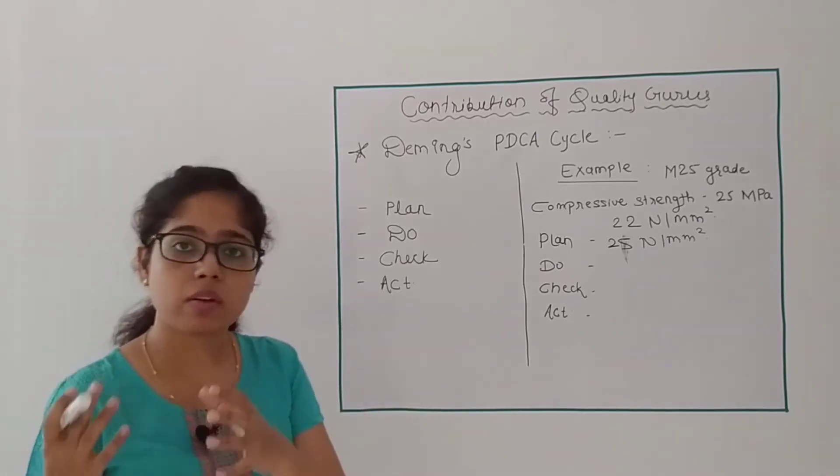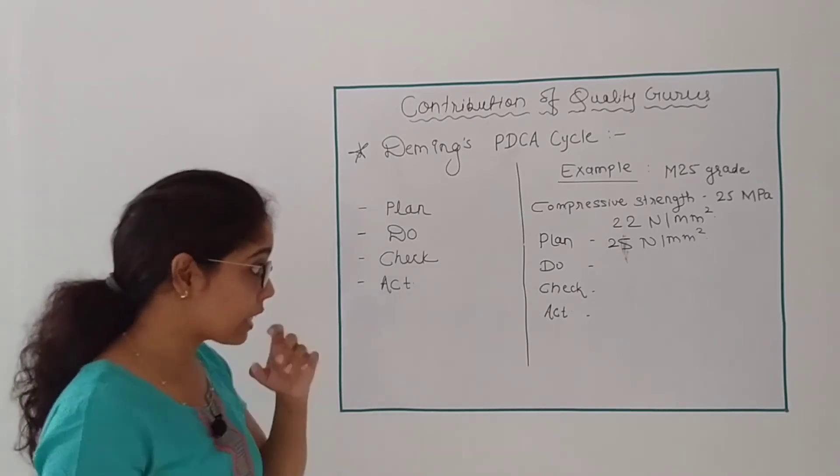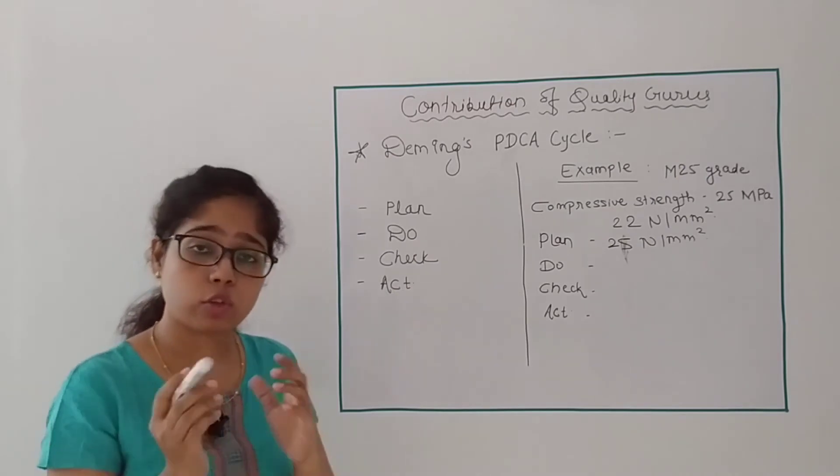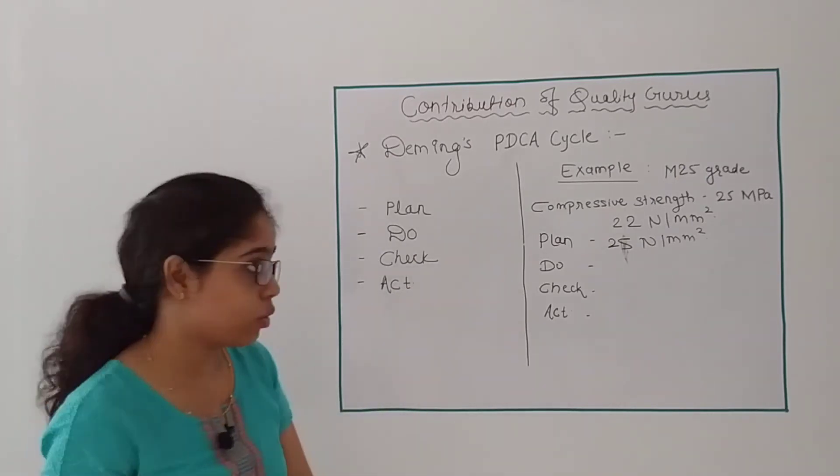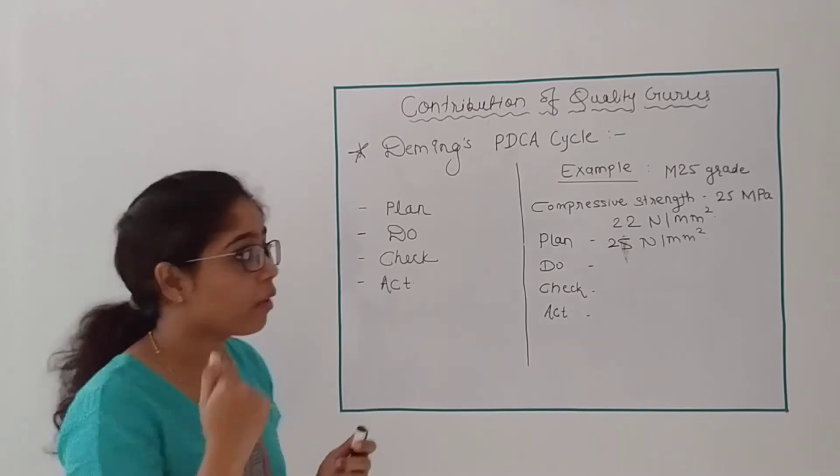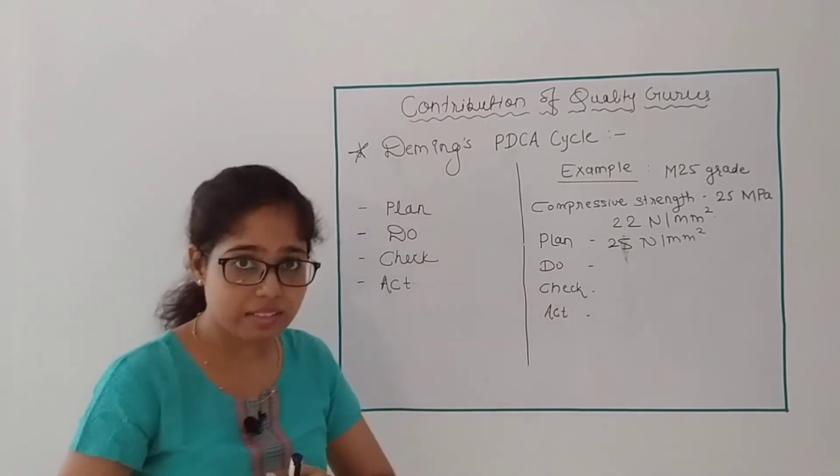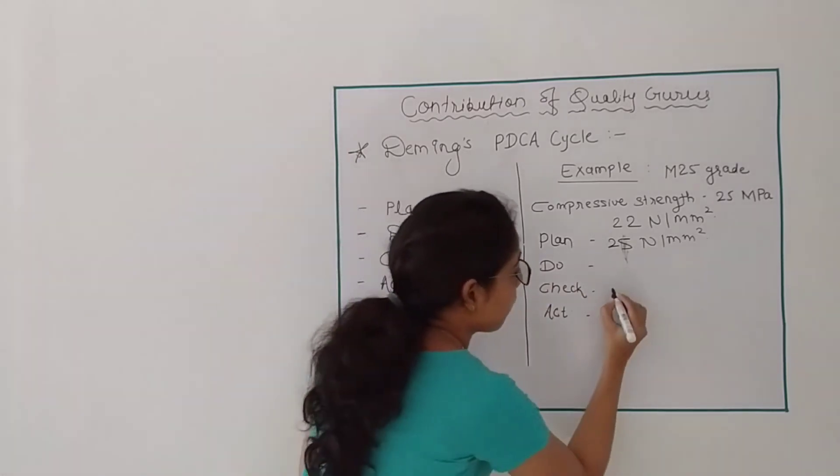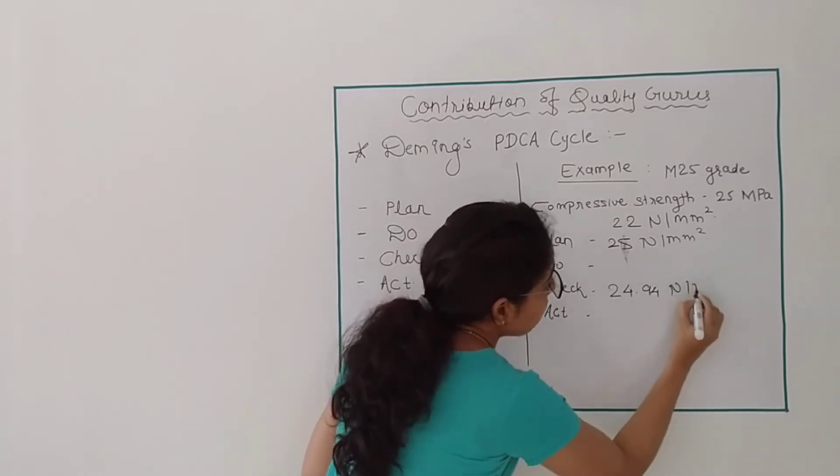Then I will check. Now I will check the compressive strength, either with CTM or UTM. I will see what I had planned, what I have done, and check the results. Suppose my result is 24.94 N per mm square.